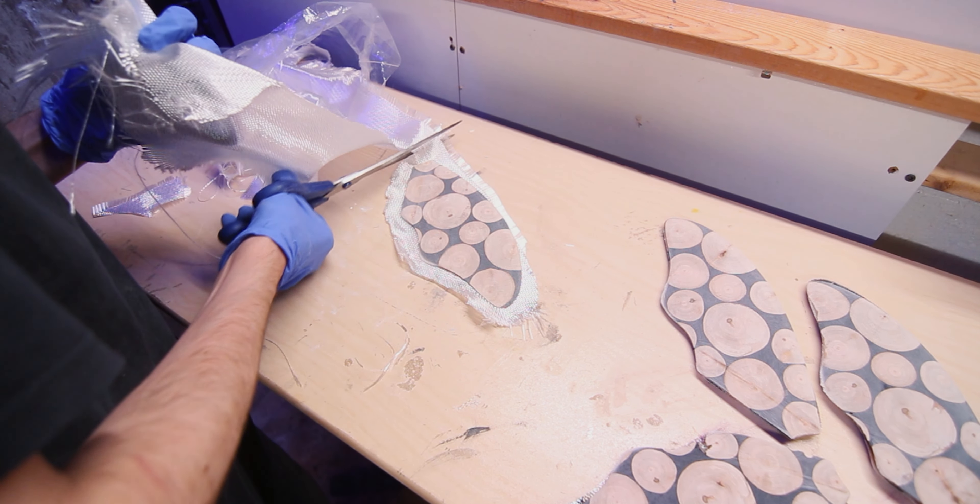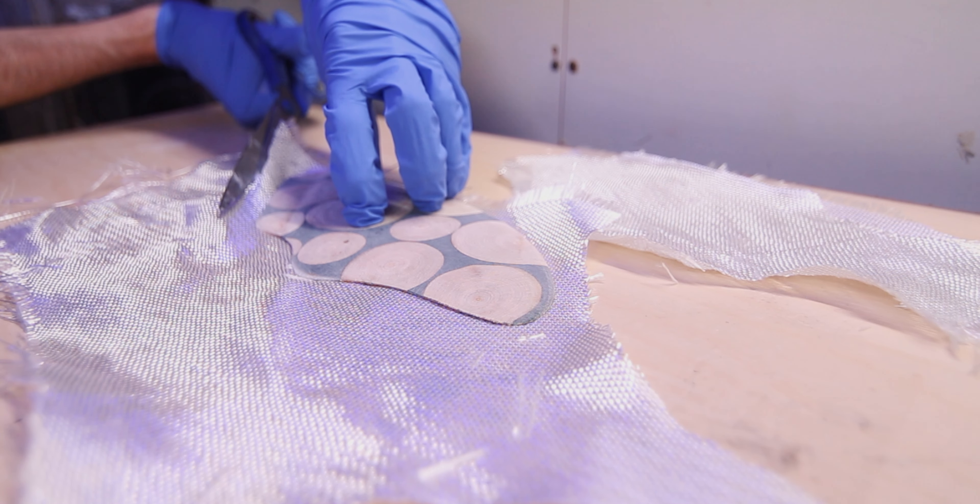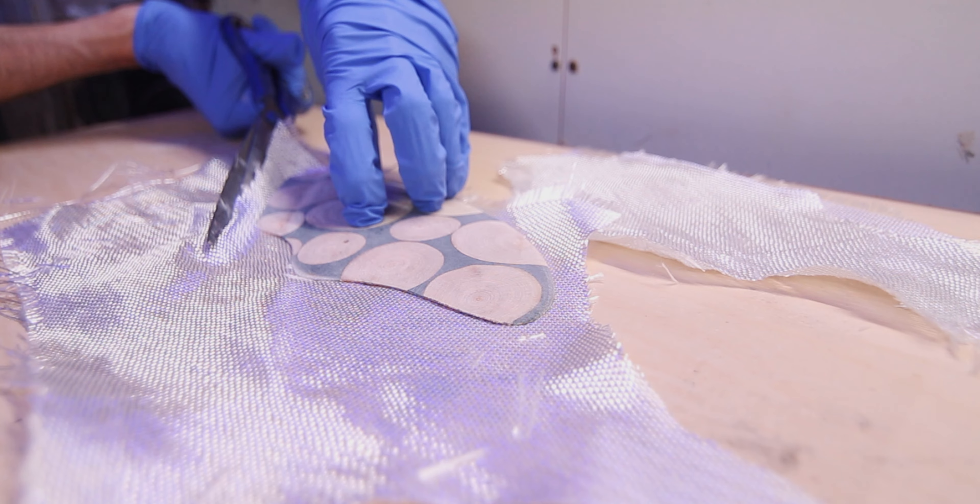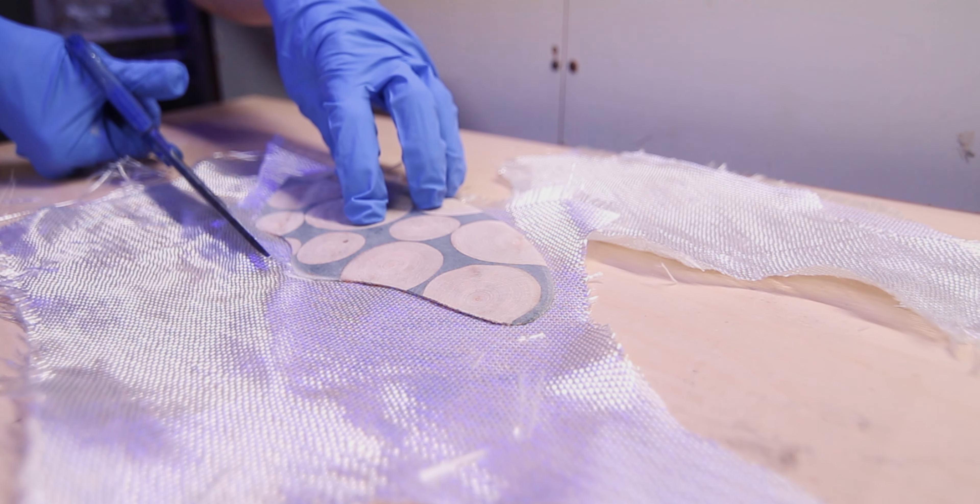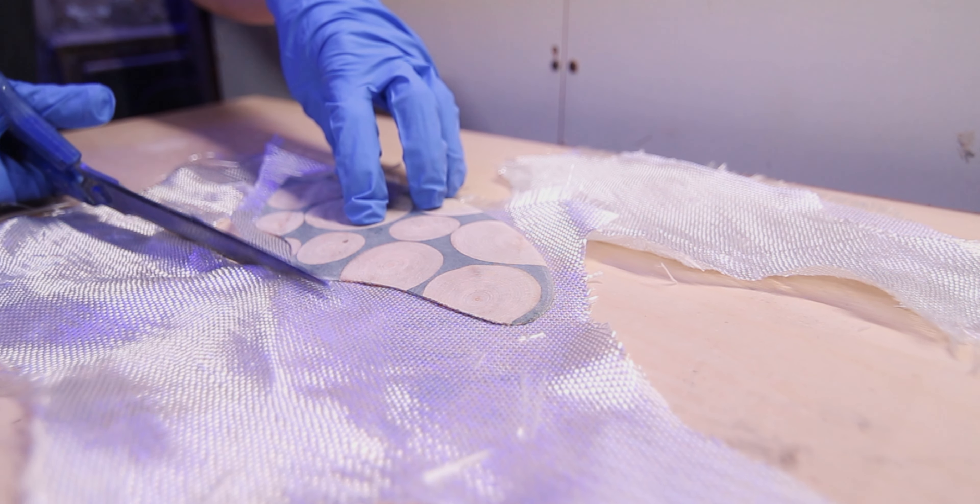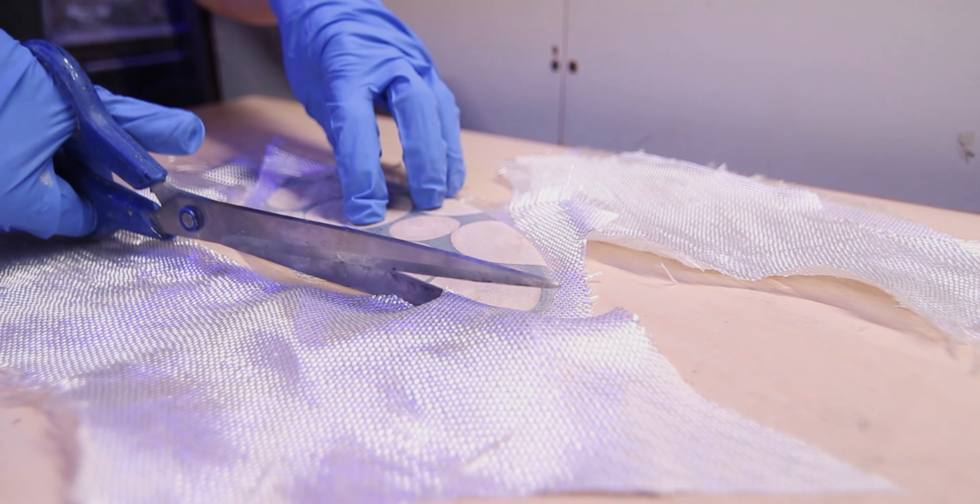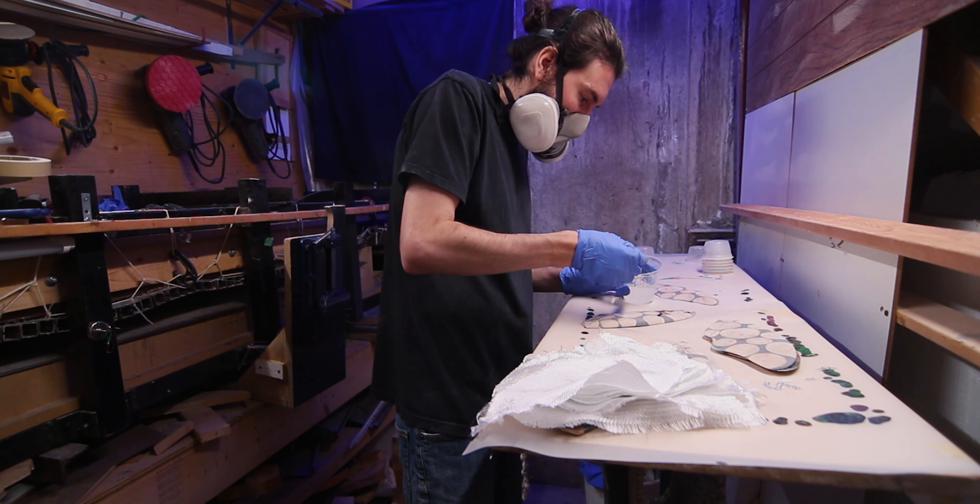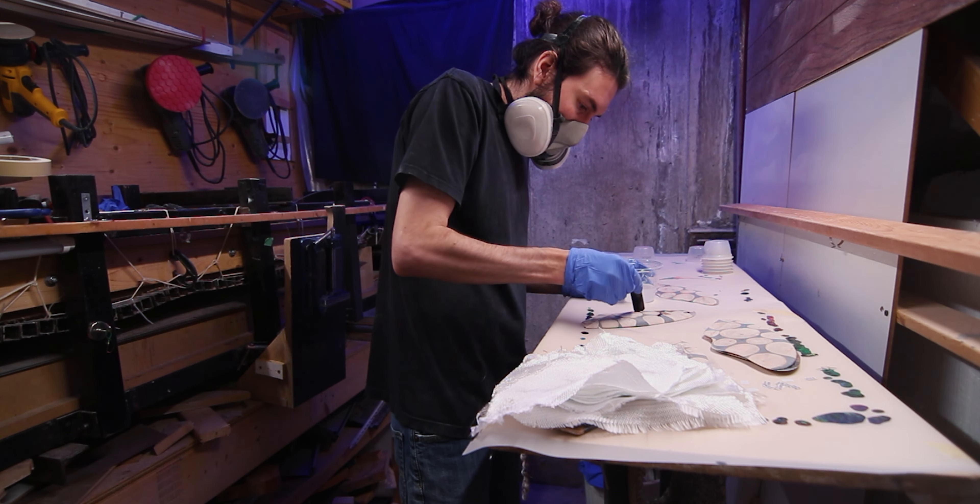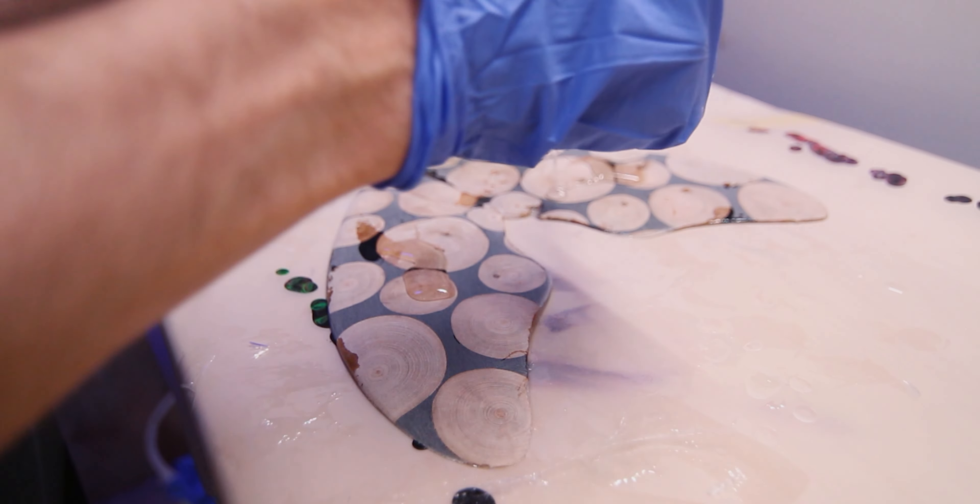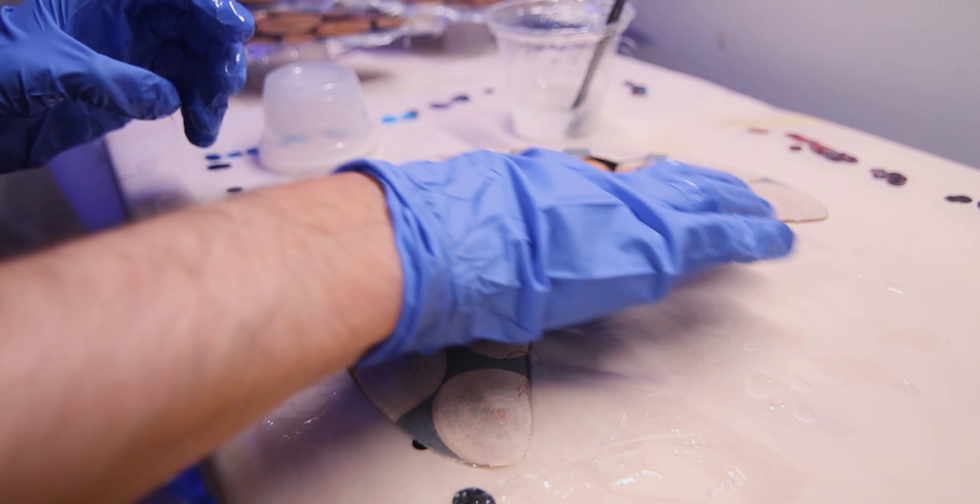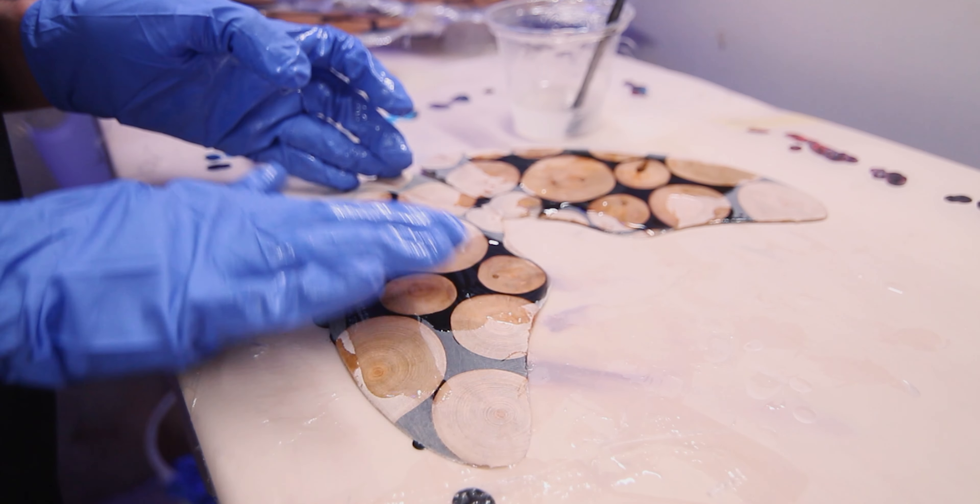Once the fins are foiled, I'll then hand sand them again to help remove any sander marks. After I finish sanding the fins and clean them off, they are now ready to be glassed and have the rice paper logo added.